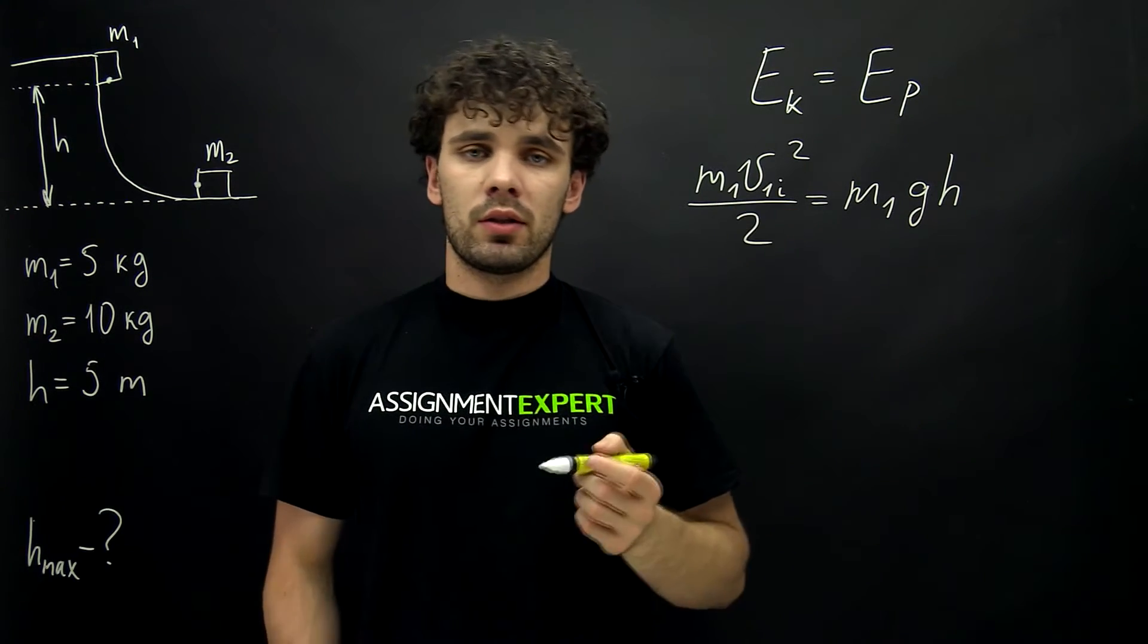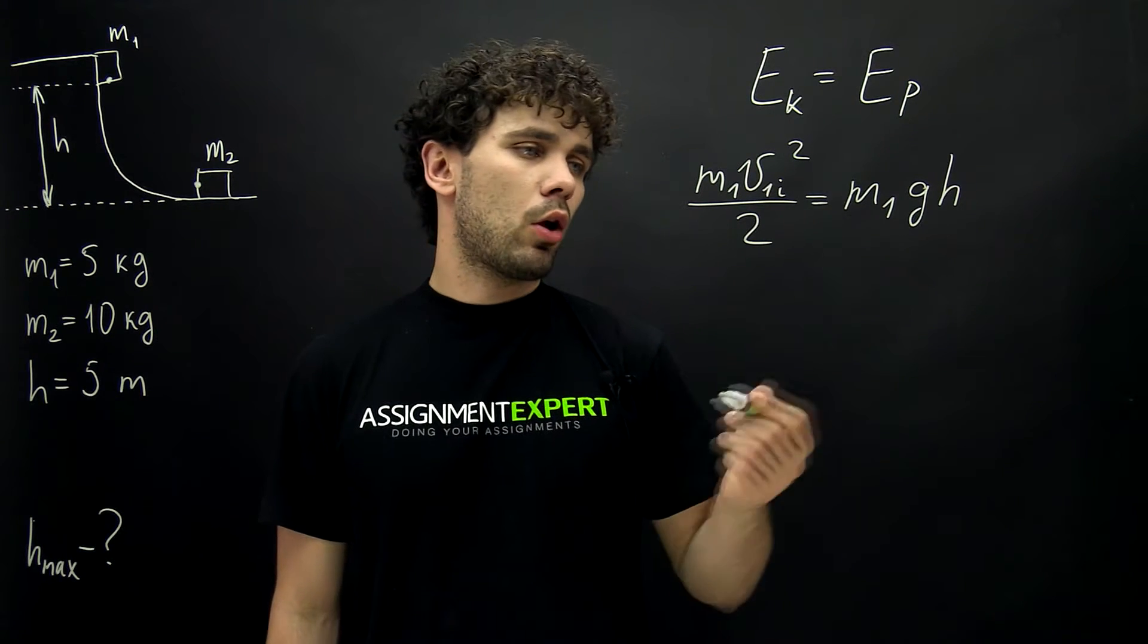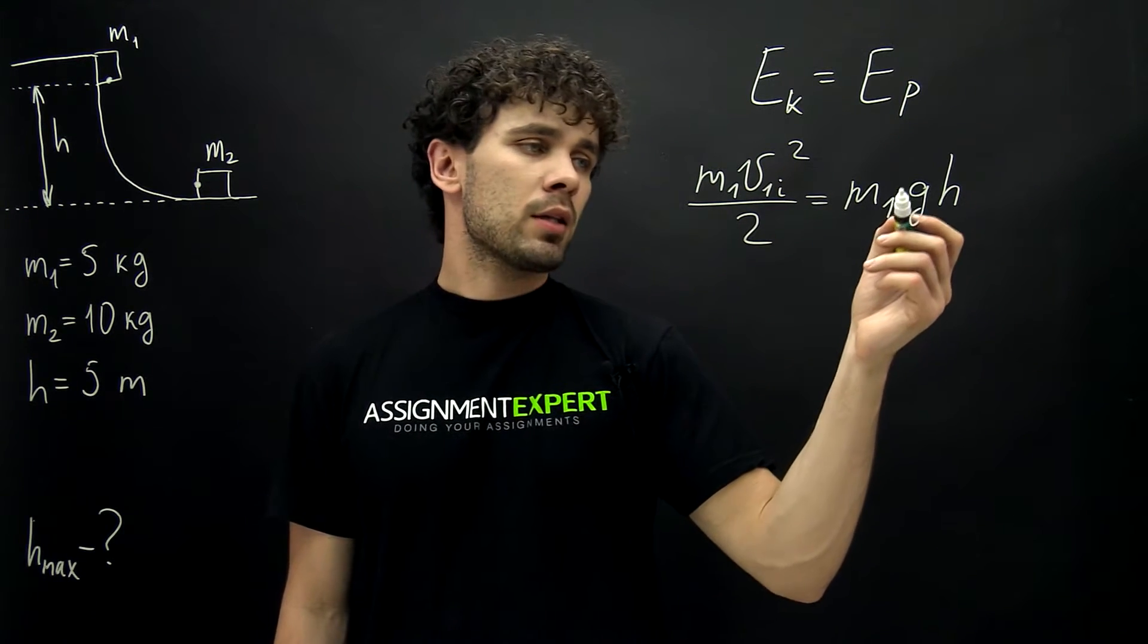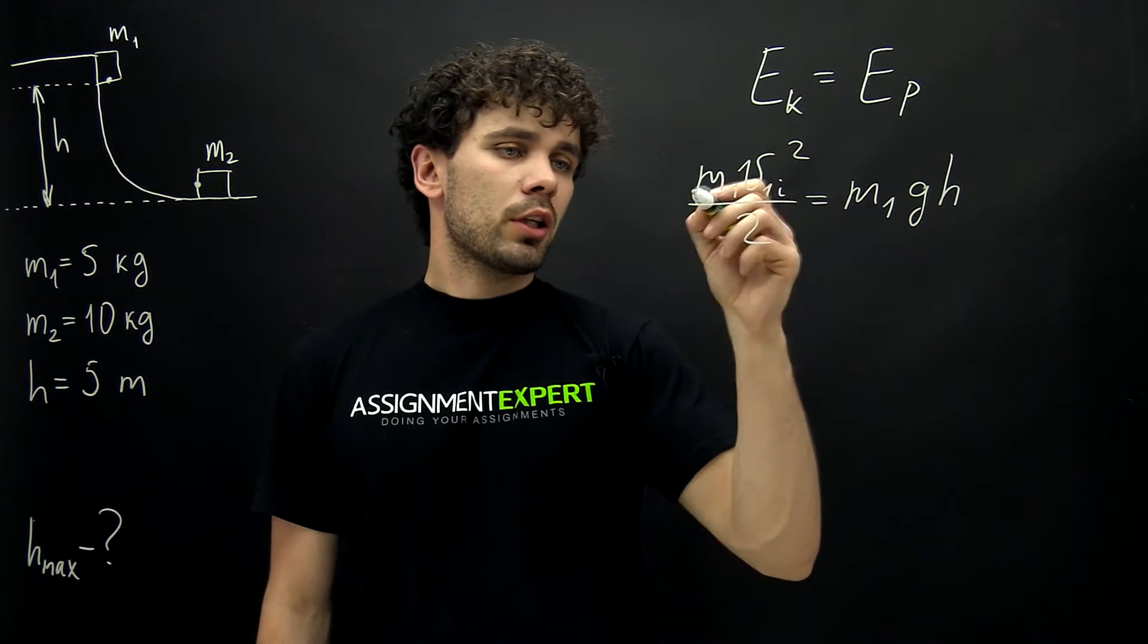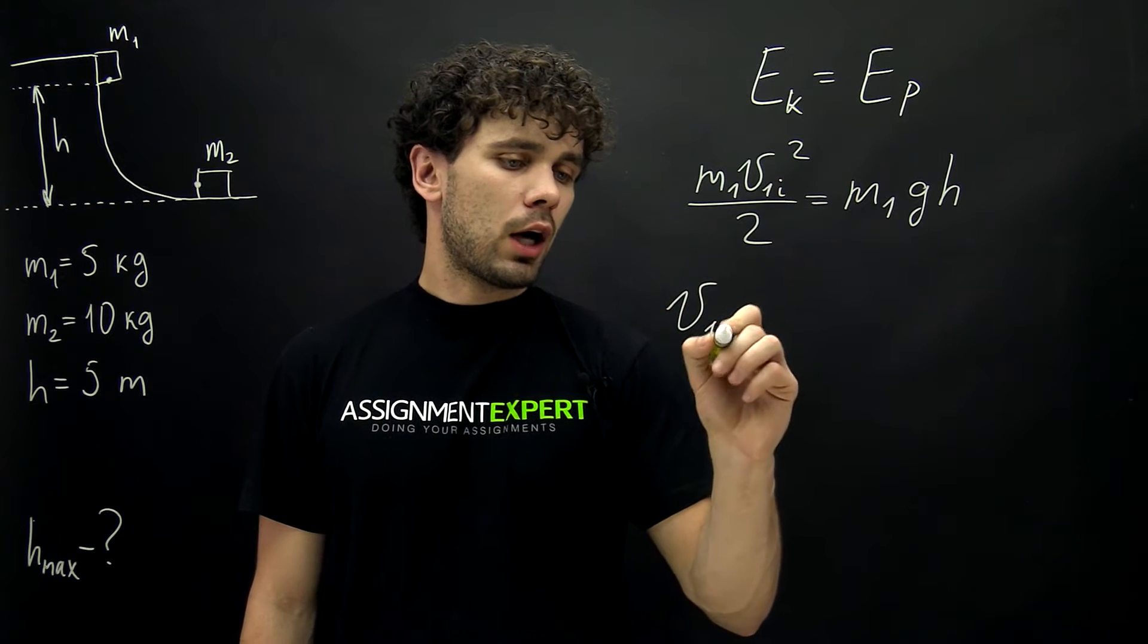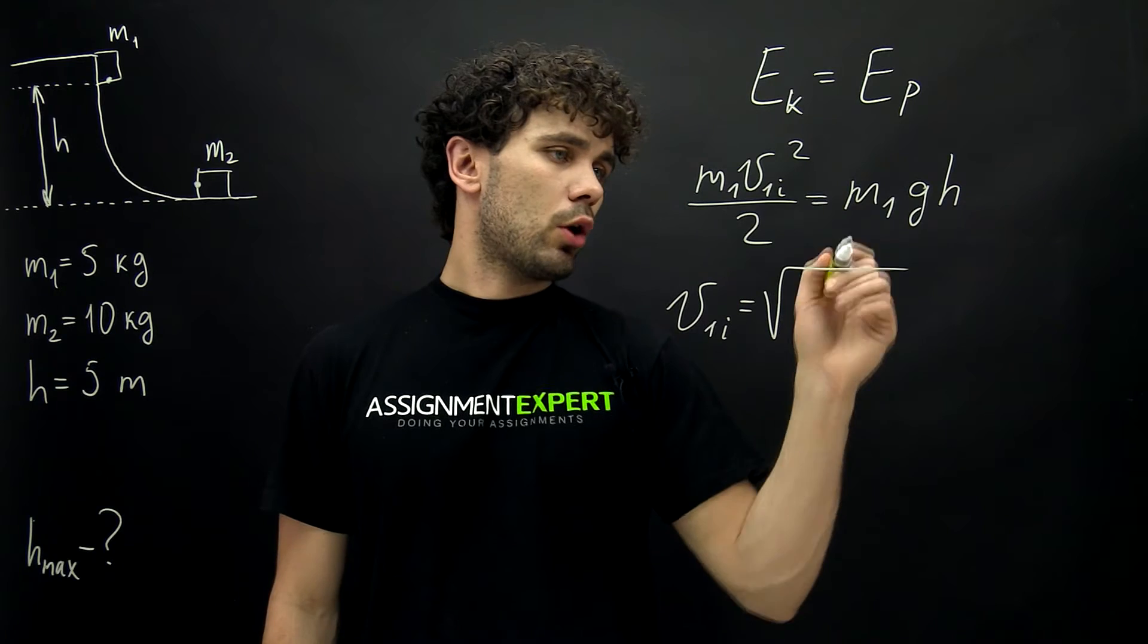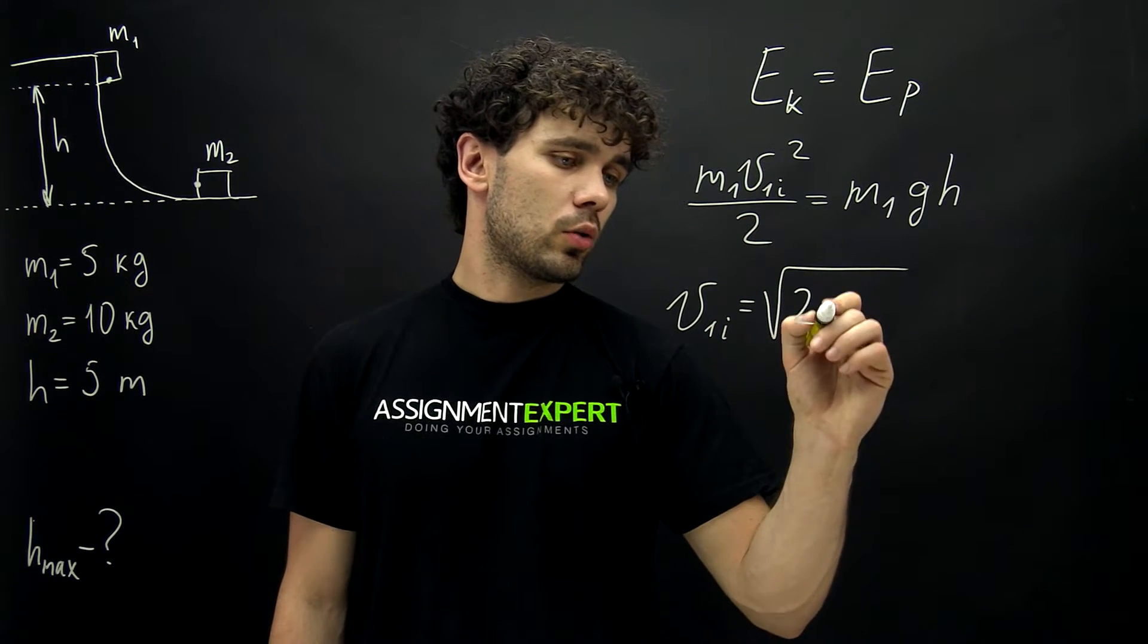So in our case we have m1 times v1i squared over 2 equals m1 times g times h, where m1 is the mass of the first block, v1i is the initial velocity of the first block, and here we have the same mass, the freefall acceleration and our height. From here we can cancel out m1 and we get that v1i equals the square root of 2gh.